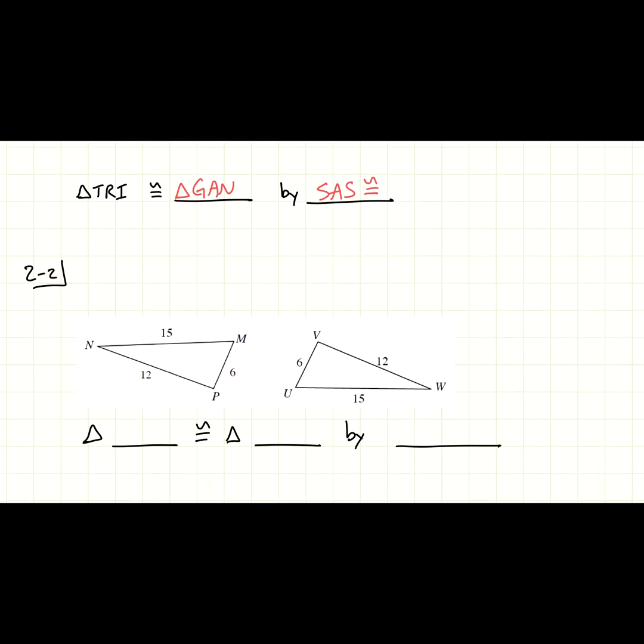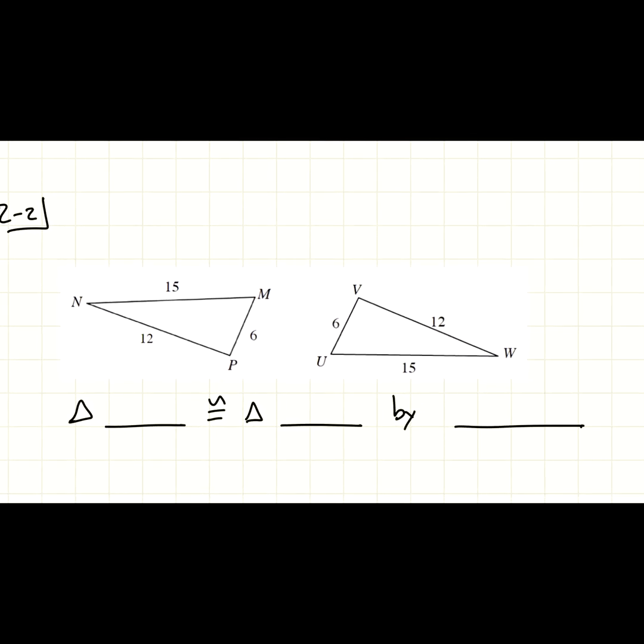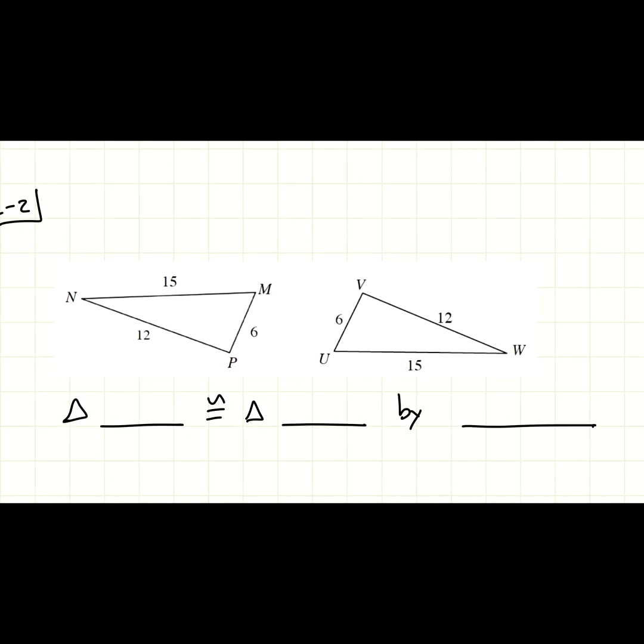All right, second example. Here we have again two triangles. I haven't started this one yet because technically you could label these however you want. So when we talk about the first triangle, you could label this however you want. You decide the order of letters you want to use. So you could use N, M, P, or you could use P, N, M. That's your choice. So I'll let you decide, or you could use the ones that I'm using.